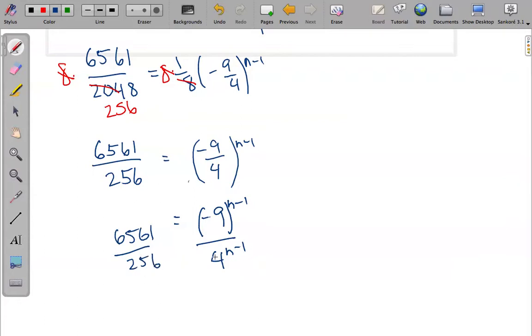If this fraction equals fraction, I know then that 256 = 4^(n-1). Well, 256 is simply 4^4, which is 4^(n-1). And so the exponents must be the same. 4 = n-1, so n = 5.